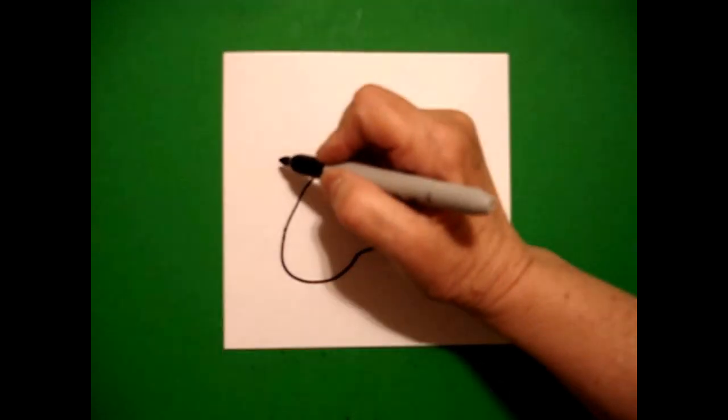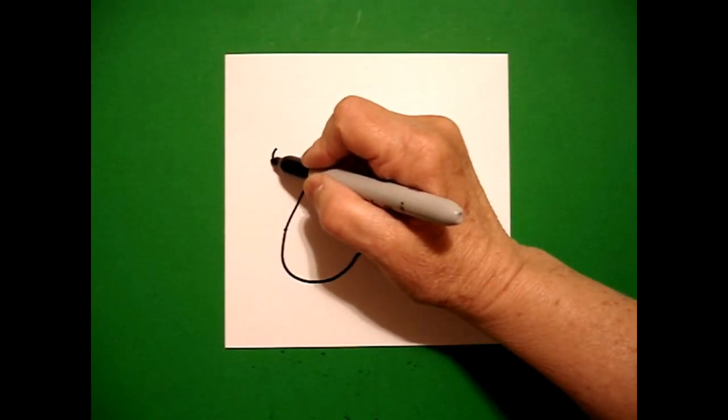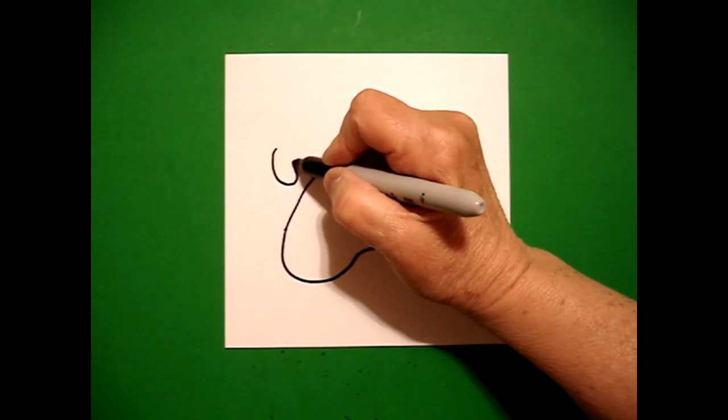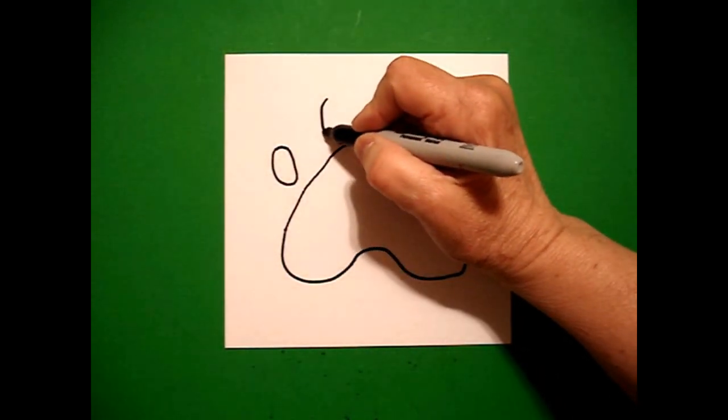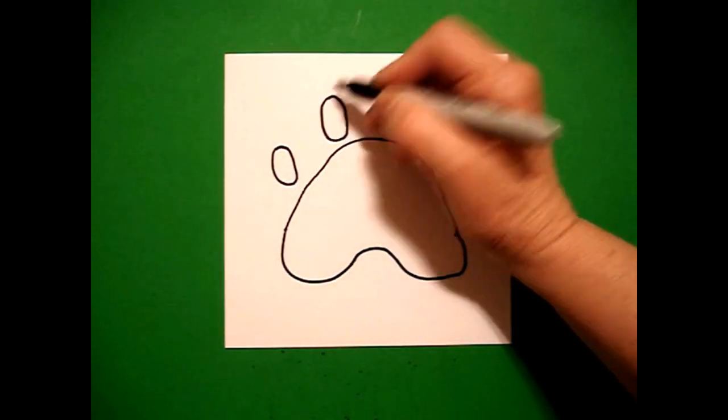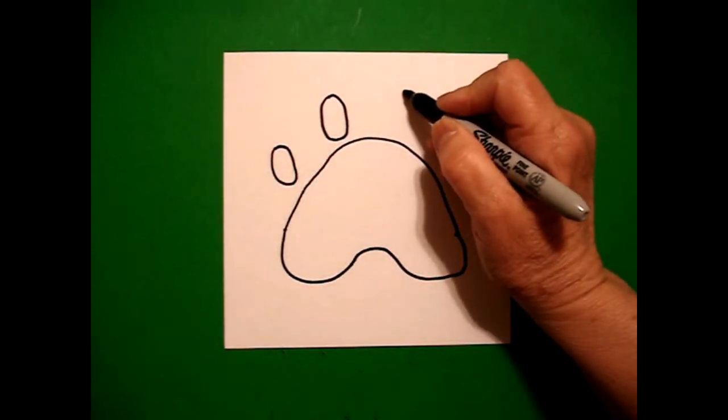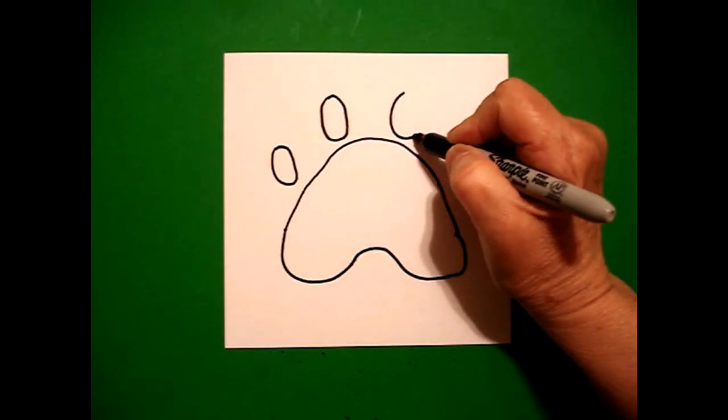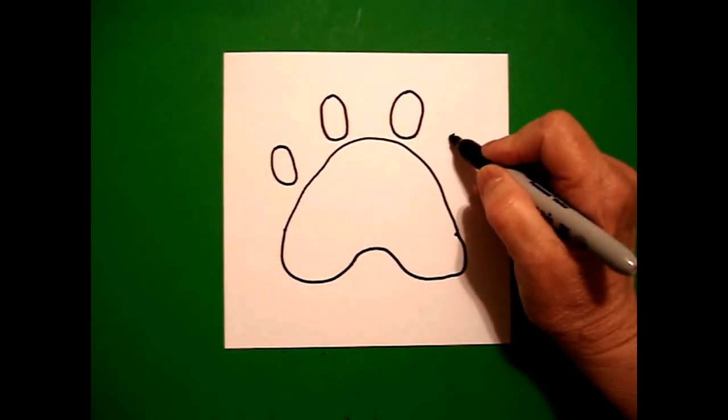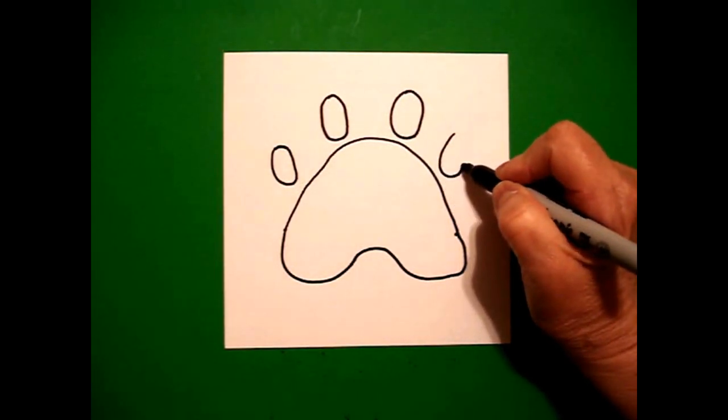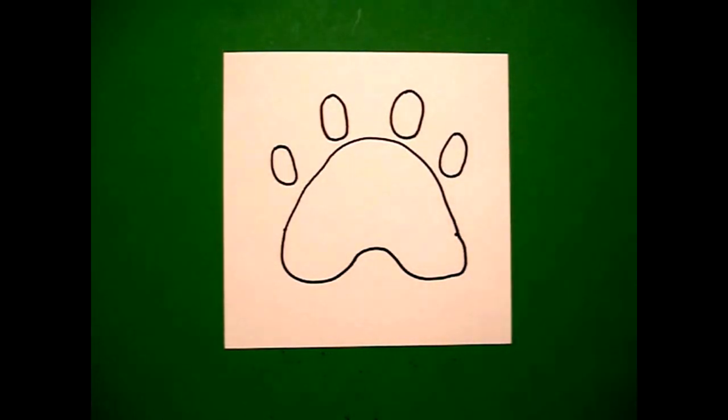I come right above starting on the left and I'm going to draw a curve line up over connect one, curve line up over connect two, curve line up over connect three, curve line up over connect four.